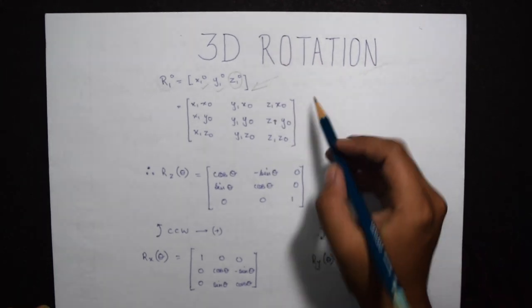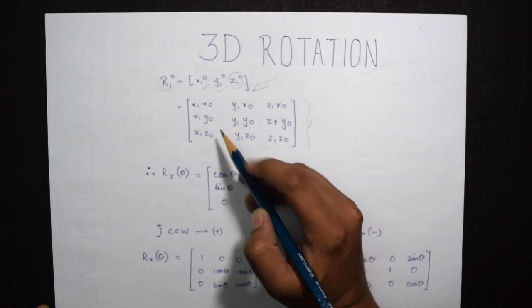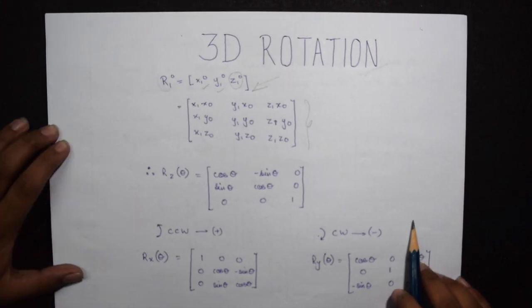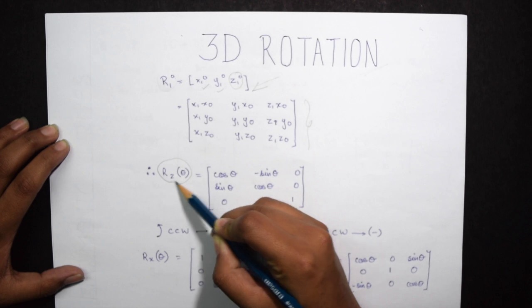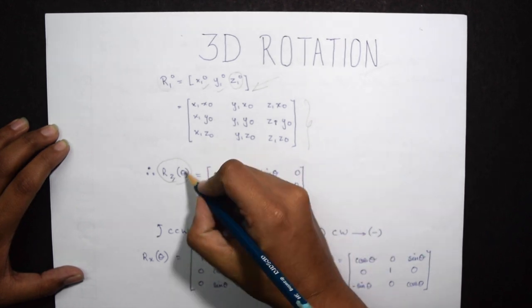We expand it like this: x1,0, x0. Expanding this similarly as we did in the earlier video, we come up to the value of rotating in the z-axis at an angle of theta.